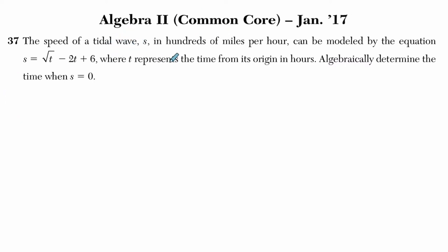Okay, so we're told that the speed of a tidal wave, S, here is S, in hundreds of miles per hour. Don't let them get you, right? My experience is I often forget what they're saying, so I underline it. Can be modeled by this equation: S equals the square root of T minus 2T plus 6, where T represents the time from its origin in hours. Algebraically determine the time when S equals 0.